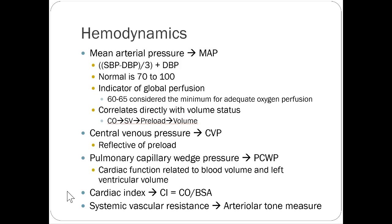MAP — mean arterial pressure — normal is 70 to 100. Global perfusion is usually considered adequate at 60 to 65, so titrating to a MAP of 60 is pretty common for a pressor starting dose. It correlates directly with volume status. Cardiac output, stroke volume, and preload are all related. Central venous pressure reflects preload, pulmonary capillary wedge pressure relates to cardiac function and blood volume, and cardiac index is cardiac output over body surface area.